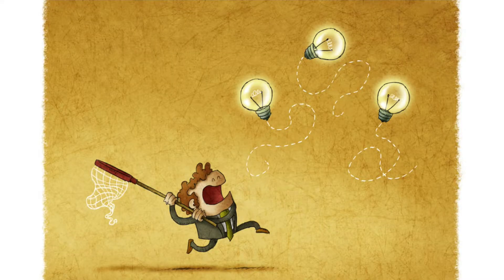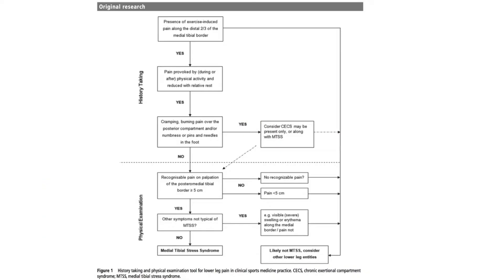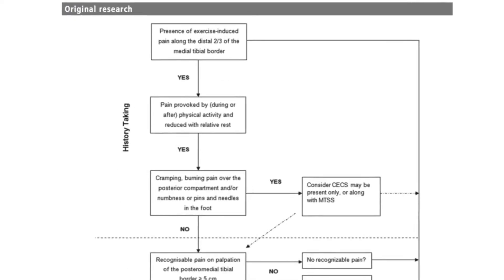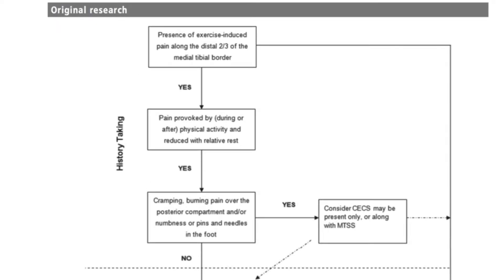What questions did they ask in the subjective history? They used an algorithm to identify potential MTSS. The first question was: do you have exercise-induced pain along the distal two-thirds of the medial tibial border? If yes, move on to the second question: is your pain provoked during or after physical activity and reduced with relative rest — i.e., activity-based pain?